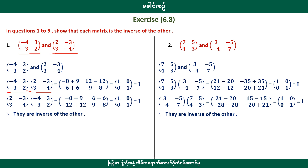We need to get the inverse. We can see that we are going to have 7, 5, 4, 3, 3, 5, 5, 4, 7. We show that 3, 5, 4, 3, and 4, with identity matrix 1, 0, 0, 1. The result will be the identity, confirming they are inverse of each other.